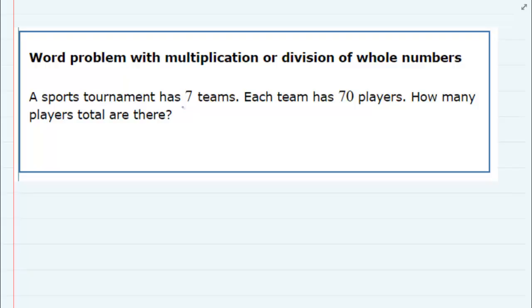So we know that there are seven teams and we know that each one of those teams has 70 players. So we have to figure out whether we're going to multiply or divide.